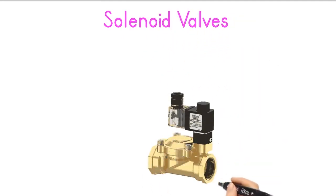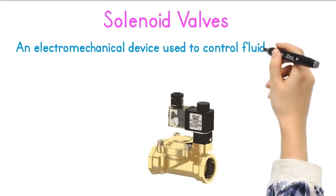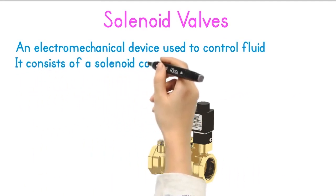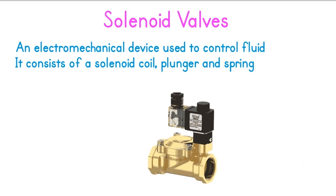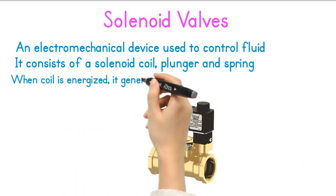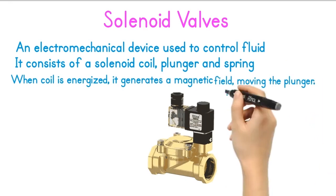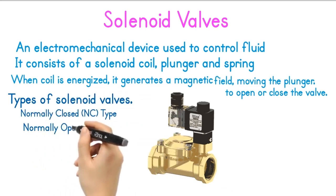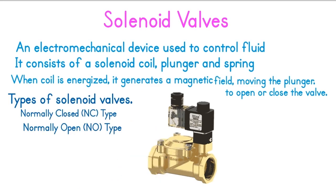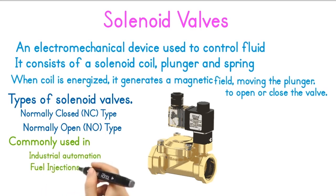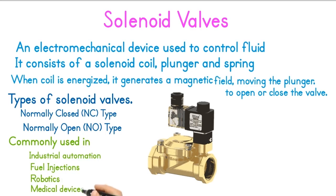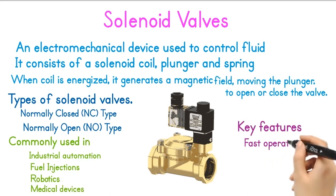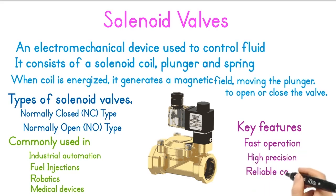Solenoid valves. A solenoid valve is an electromechanical device used to control fluid flow. It consists of a solenoid coil, plunger, and spring. When the coil is energized, it generates a magnetic field, moving the plunger to open or close the valve. There are two types: normally closed (NC) and normally open (NO). Solenoid valves are commonly used in industrial automation, fuel injection, robotics, and medical devices. Key features include fast operation, high precision, and reliable control.